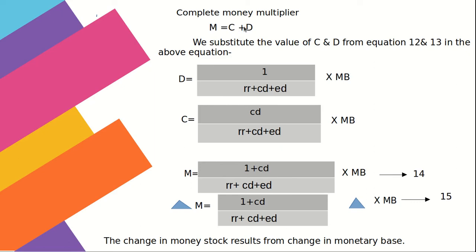Complete money multiplier: since M = C + D, substituting the expressions for currency and deposits, money M = [(1 + CD) / (RR + CD + ED)] × MB. For the change in money stock: ΔM = [(1 + CD) / (RR + CD + ED)] × ΔMB. A change in monetary base results in a change in money stock, currency, and deposits.